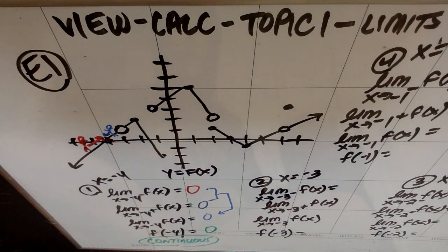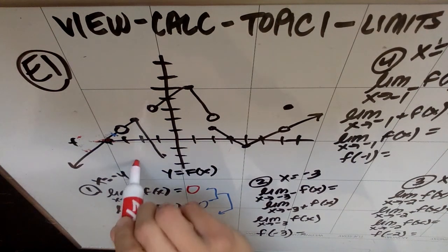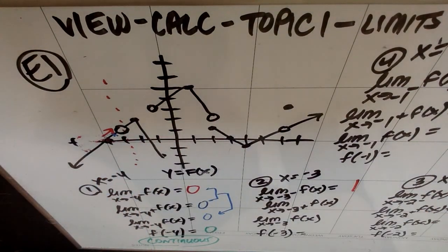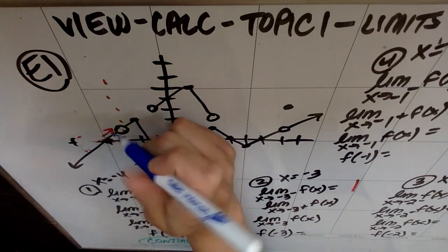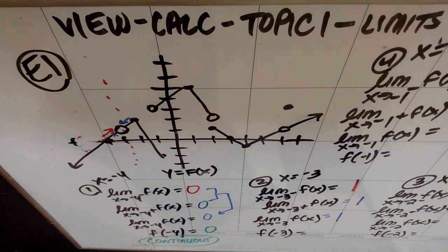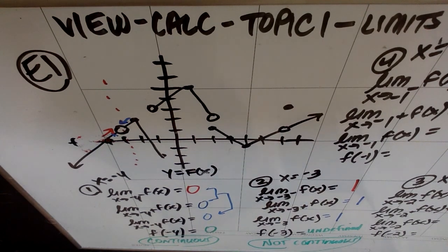Let's move to x equals negative three. So this is the spot right here. If a guy was approaching from the left and walking towards x equals negative three, he'd be walking towards a y value of one. If a guy were just right of that spot on the curve and walking towards it, he'd also be walking to a y value of one. Because those two numbers are the same, the double-sided limit is also one. But here's where it's tricky — if you look at your graph, there is no closed dot. So f of negative three is undefined; it literally does not have a value. And so it is not continuous, because to be continuous, all four values have to be the same.